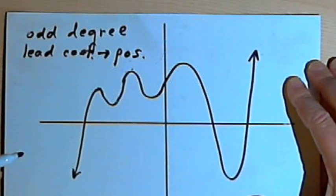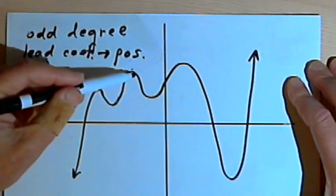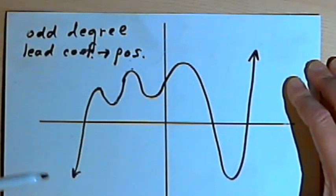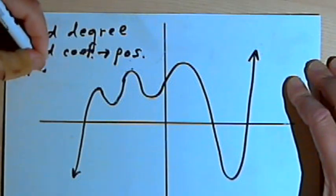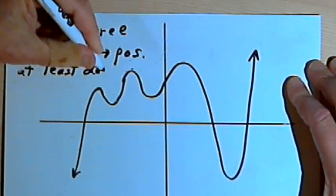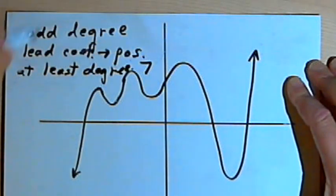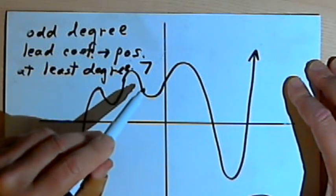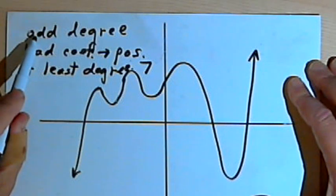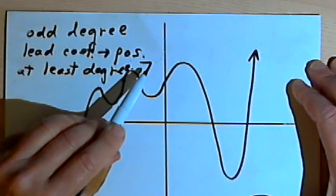And now we can count the turning points and see what that tells me about the degree. I've got 1, 2, 3, 4, 5, 6 turning points. I'll add 1, and that means that this was at least degree 7. And again, if it's not degree 7, then the next possible degree would be 9 because I can only have odd degrees. So it would be 7 or 9 or 11 and so on.